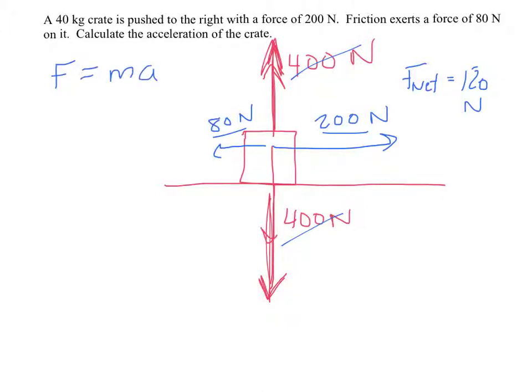The correct formula would be F net equals M times A. So before, we didn't have multiple forces, so the net force just equaled the force of what we were pushing at.